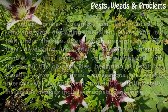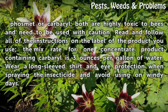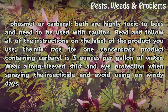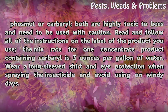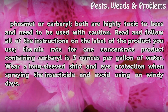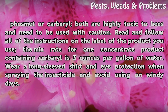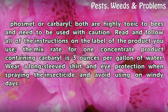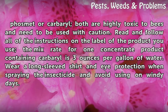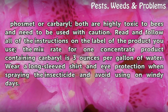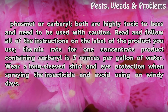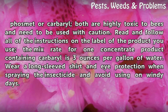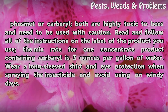Insecticide choices include products containing phosmet or carbaryl; both are highly toxic to bees and need to be used with caution. Read and follow all instructions on the label. The mix rate for one concentrate product containing carbaryl is 3 ounces per gallon of water. Wear a long-sleeved shirt and eye protection when spraying, and avoid using on windy days.